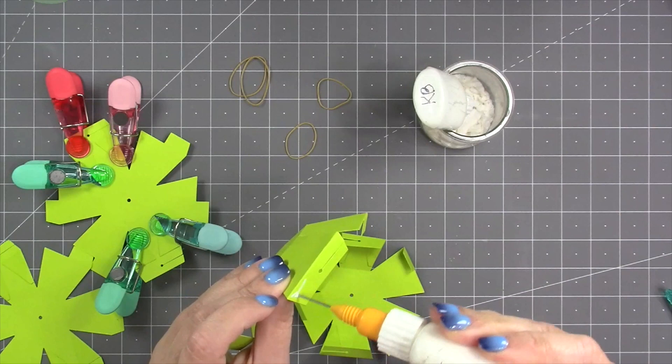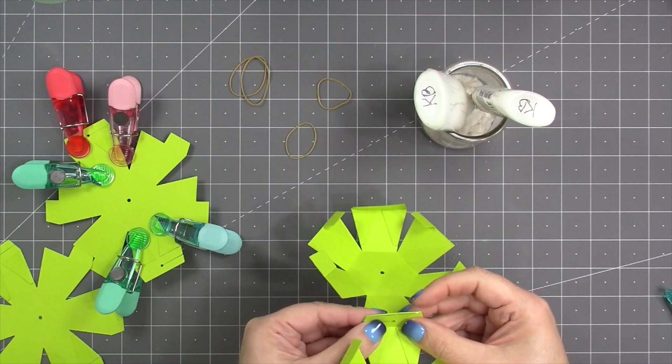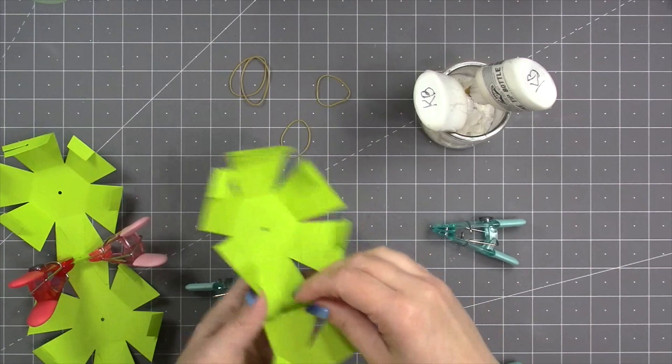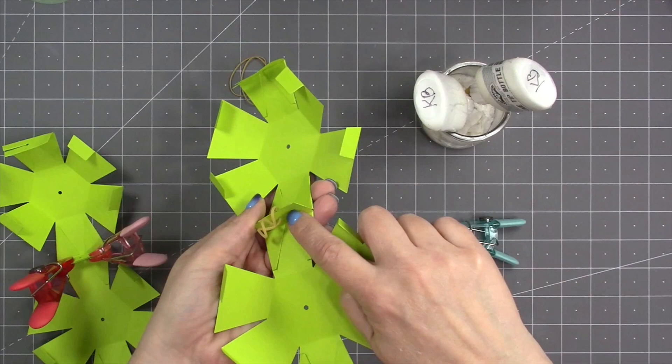Now it is time to do the kiss connection where I connect the two full tabs to each other, making sure that both the holes and the slits line up, and then just clip it until the glue sets up.